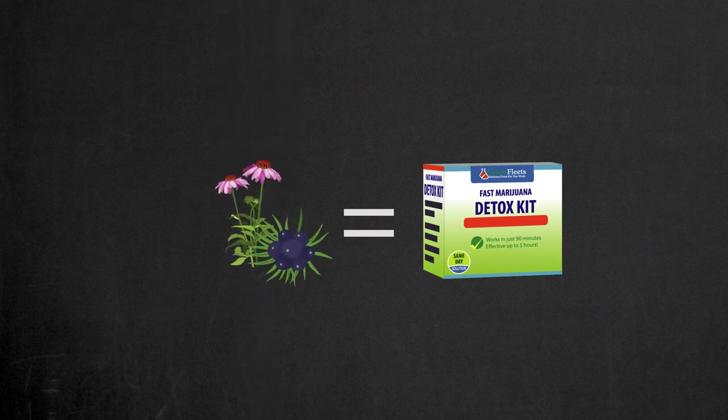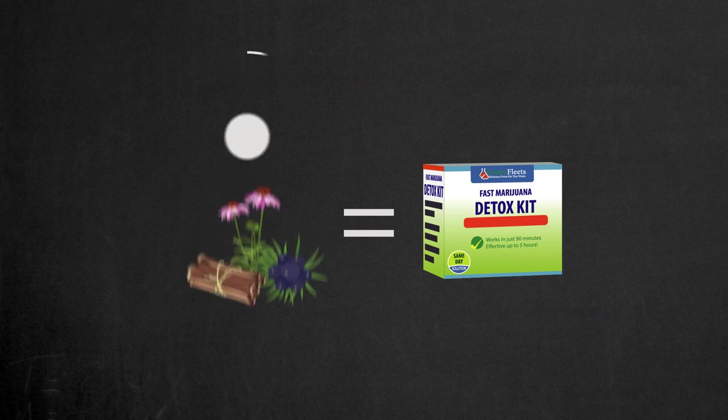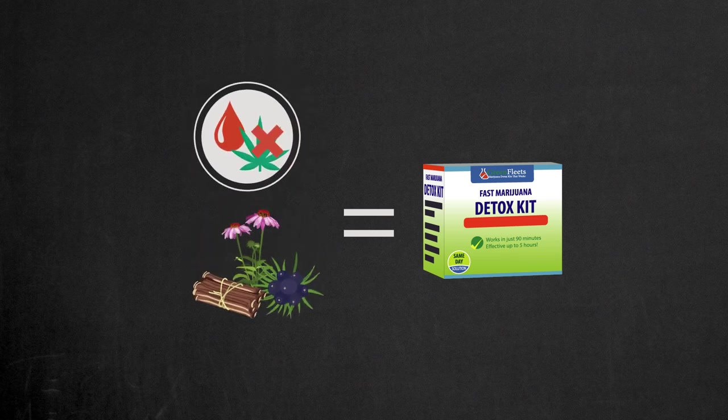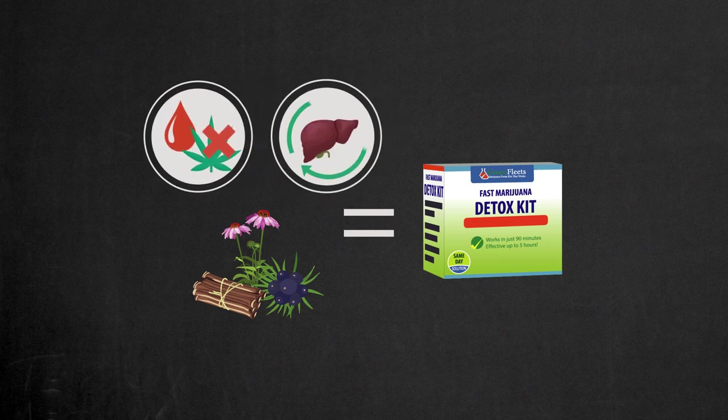Echinacea, juniper berry, licorice root, and others. These are antioxidants that help to remove more metabolites from the blood. They also improve the liver function.